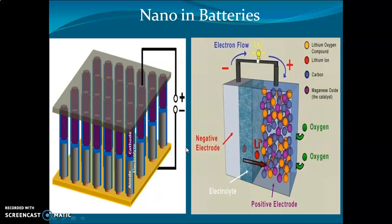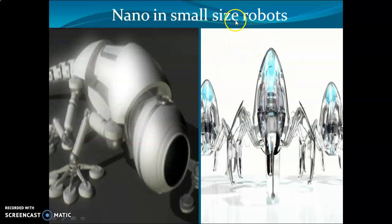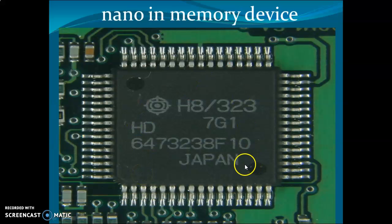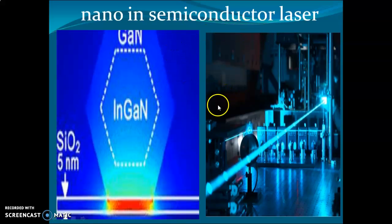Nano robots are used in robotics for space purposes, medical monitoring, and spying applications. In IT, nanotechnology is used to make memory devices, mobile chips, and electronic gadgets. It is used to make semiconductor lasers. The motherboard of a computer is made using nanotechnology. Nanomaterials placed in devices allow generation of lasers, as discussed in crystal physics.